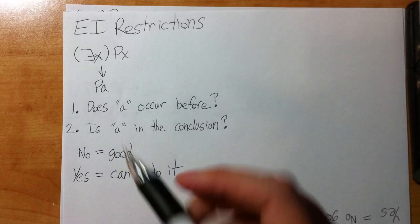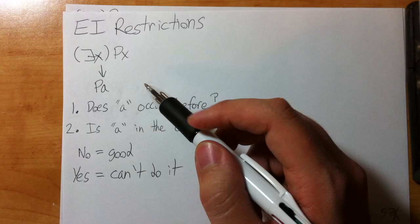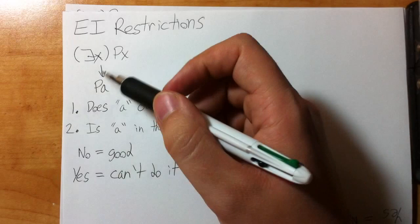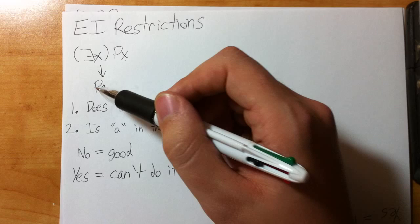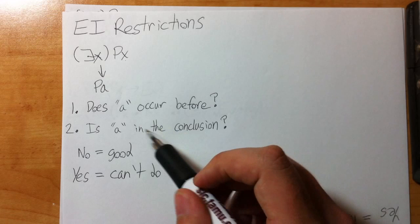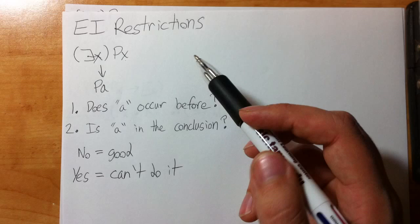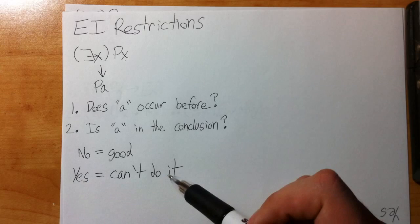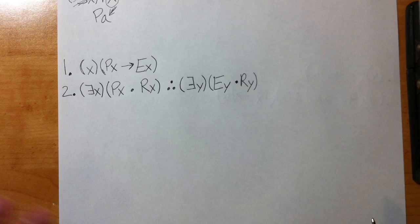The way EI works, we can take an existential statement and make it an instance, but we have to ask ourselves two questions. Does a occur before? Does the letter that we choose to replace the variable with happen anywhere else in the proof beforehand, in the premise, in a line before? If it does, we can't pick a letter that's already been picked. Very important—can't pick a letter that's already been picked. Second, is does a appear in the last line of the proof or in the conclusion? If the answer is yes, if a or whatever letter you choose appears in the conclusion, then it's no good. So if you can answer no to both these questions, you're good. You can do EI. If you answer yes to just one of those questions, you can't do it.